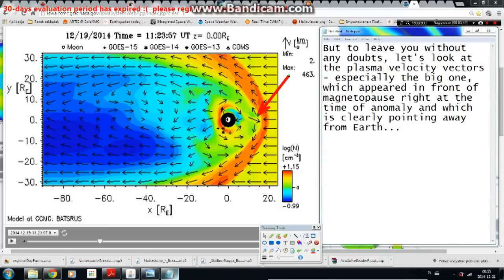But to leave you without any doubts let's look at the plasma velocity vectors. Especially the big one which appeared in front of magnetopause right at the time of anomaly and which is clearly pointing away from Earth.